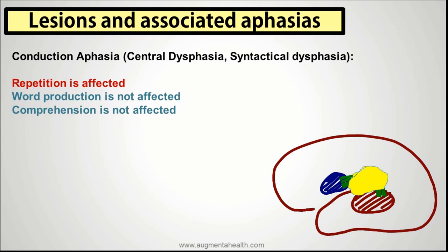Conduction aphasia is also called central dysphasia or syntactical dysphasia. Herein, repetition is affected, and word production and comprehension are affected — though comprehension is noted as not affected in some descriptions.